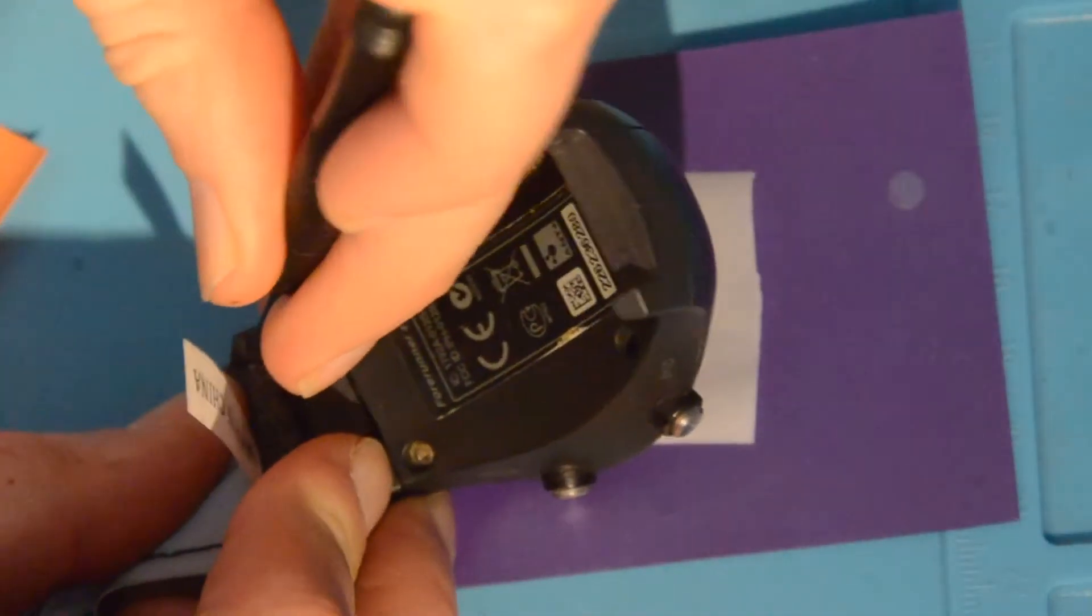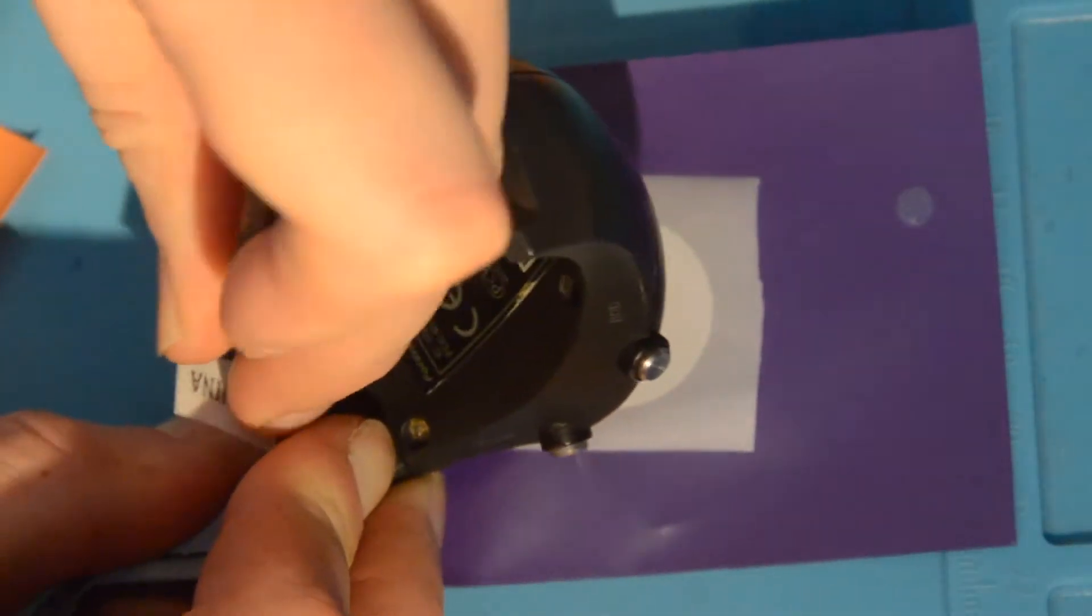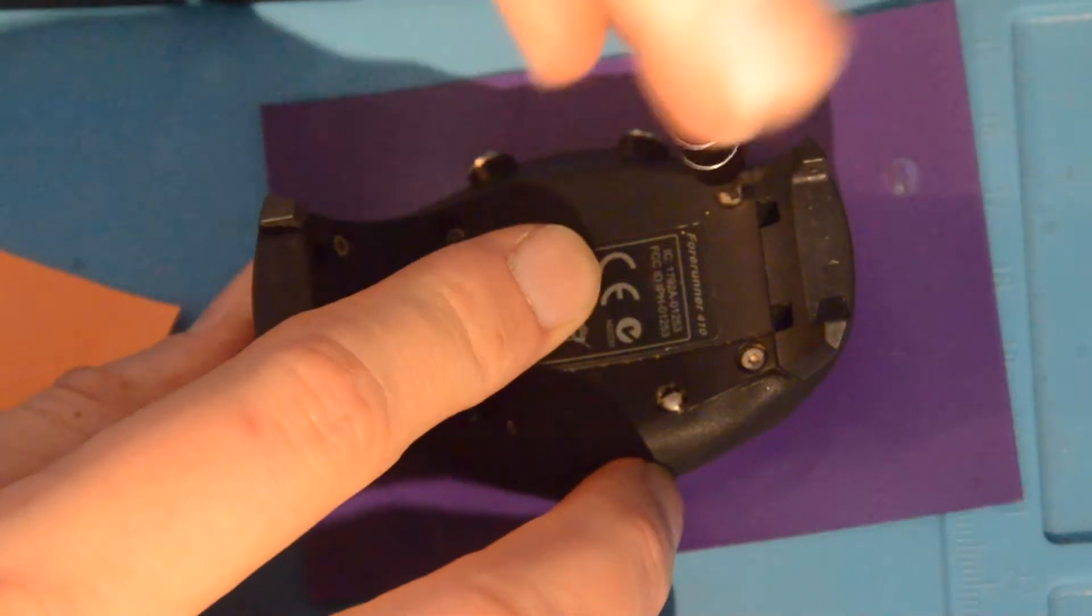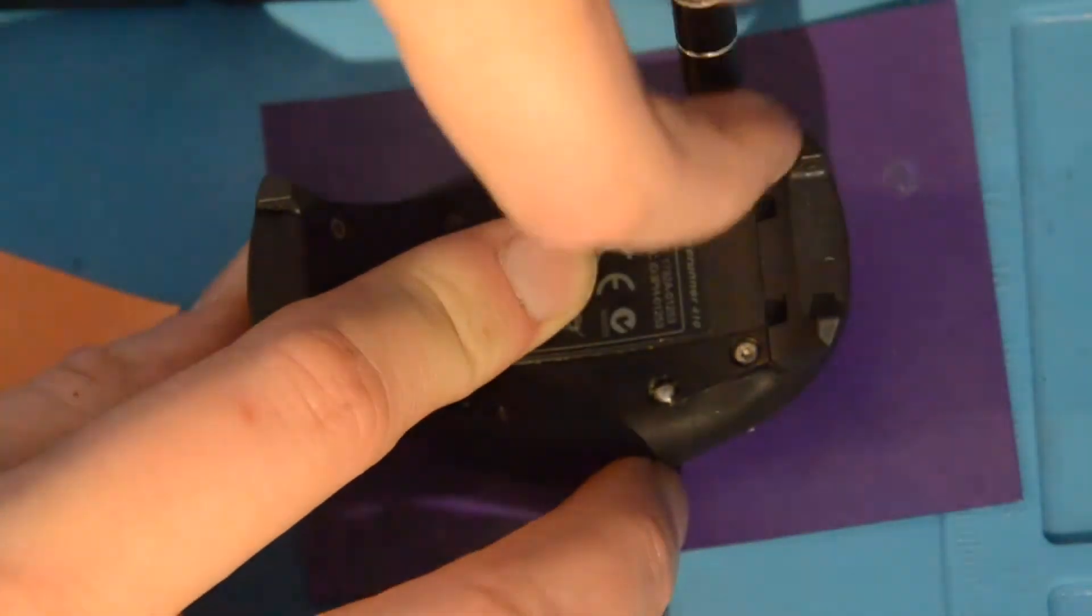But first, just getting the strap and strap ends off is a bit of a dark art. Garmin provide a special forked pokey tool for this, but a thin screwdriver blade or shim wouldn't make the job much harder.